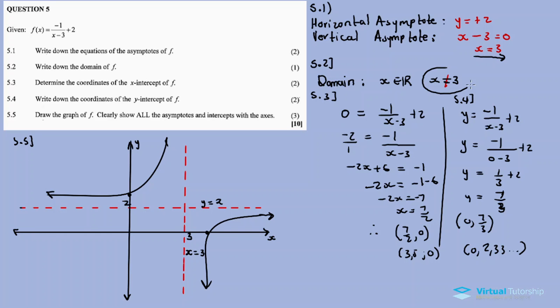The domain goes from negative infinity to positive infinity, but x equals 3 is excluded. It's excluded because the function never touches it, only approaches but never touches or crosses the point x equals 3. This is the domain and this is our function.